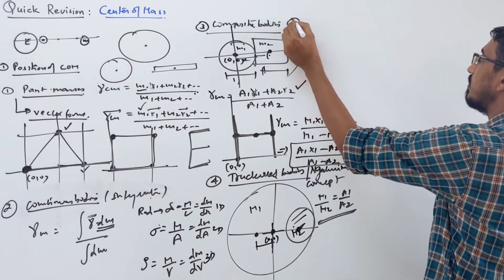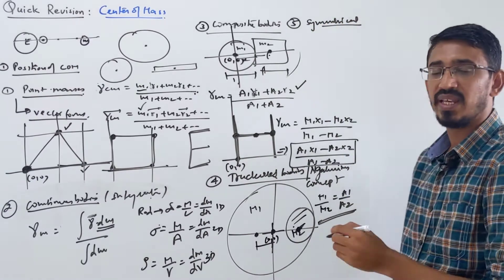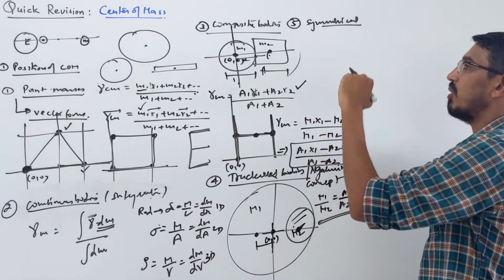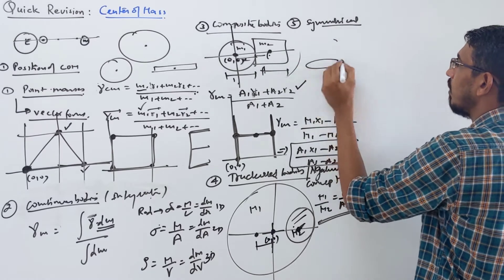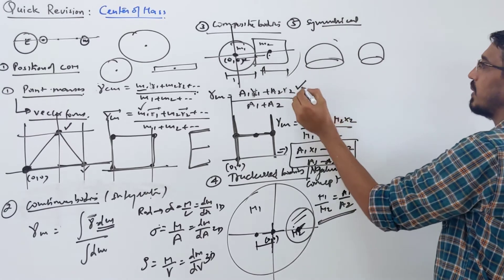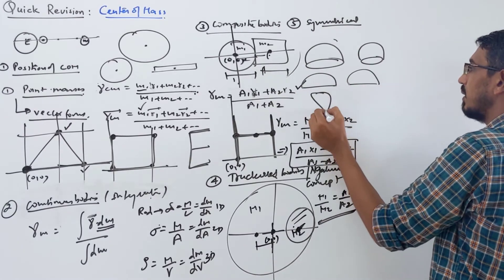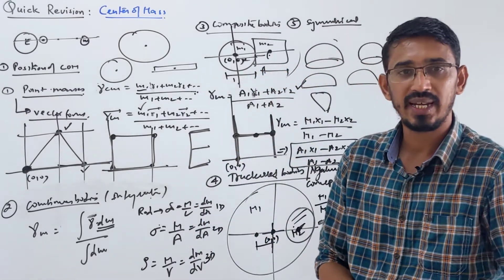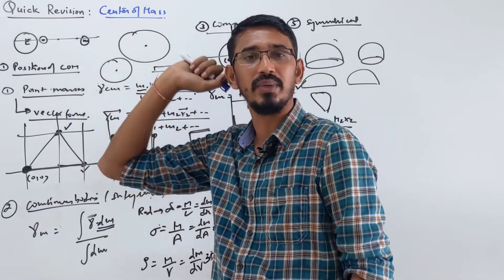The fifth type involves symmetrical bodies — these values you have to remember directly because they come from integration. I gave examples of 8 objects: hollow sphere, solid sphere, half ring, half disc, sector, and similar ones. For these, the position of center of mass is a standard result you memorize directly. These were the 5 question types based on the position of the center of mass.